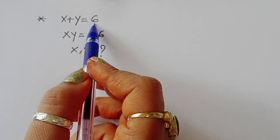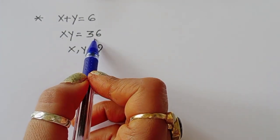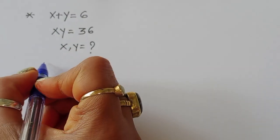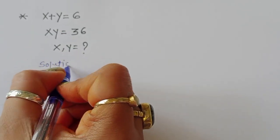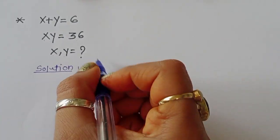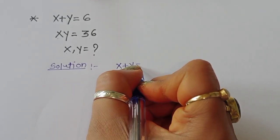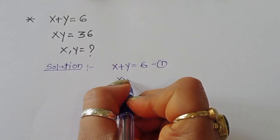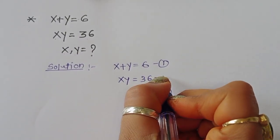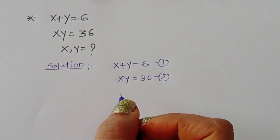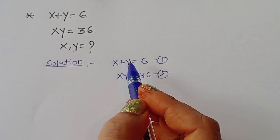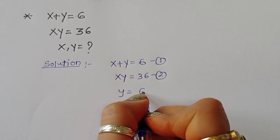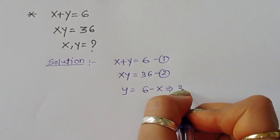The question gives us x plus y is equal to 6, and xy is equal to 36. We have to find out the value of x and y. So here x plus y equals 6 is equation 1, xy equals 36 is equation 2. From equation 1, we find y equals 6 minus x, which is equation 3.